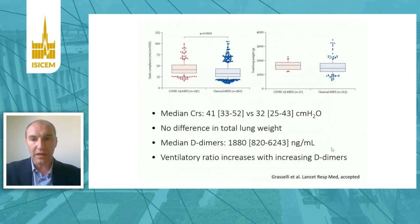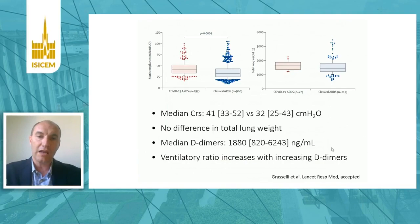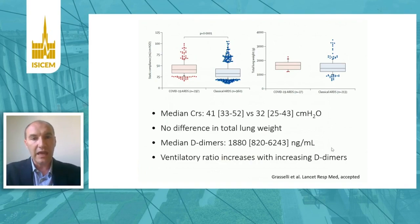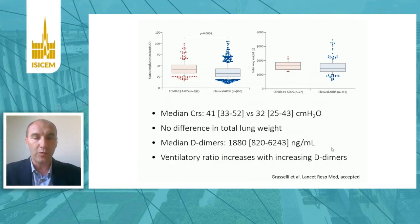Median respiratory system compliance in COVID-19 was 41 ml/cmH₂O, compared to 32 ml/cmH₂O in classical ARDS — about 28% higher — but with a wide distribution. There was no difference in total lung weight. Median D-dimers in COVID-19 were above 1800, and importantly, ventilatory ratio increased with increasing D-dimers, showing a relationship between endothelial/vascular compromise and dead space fraction.